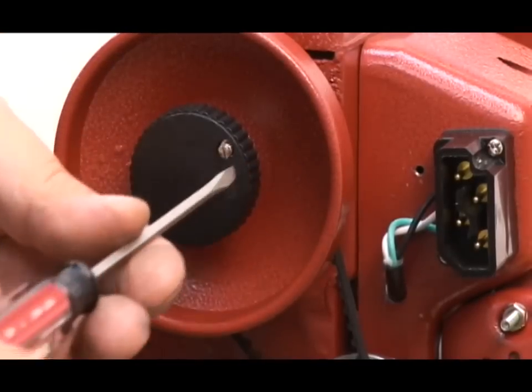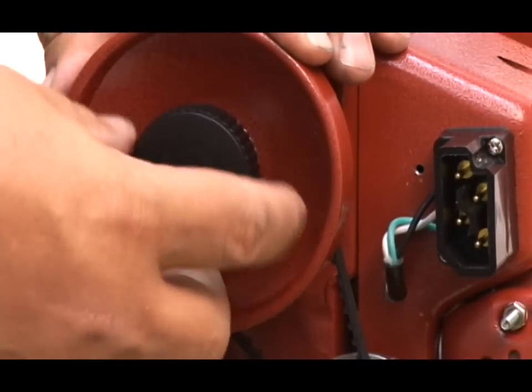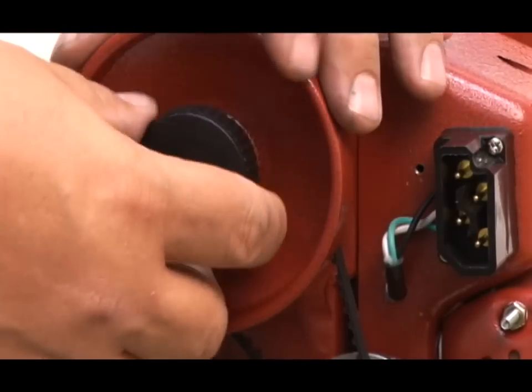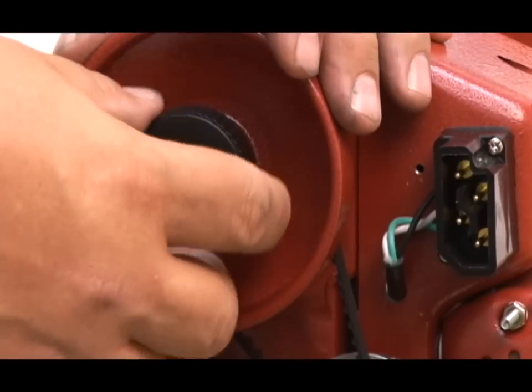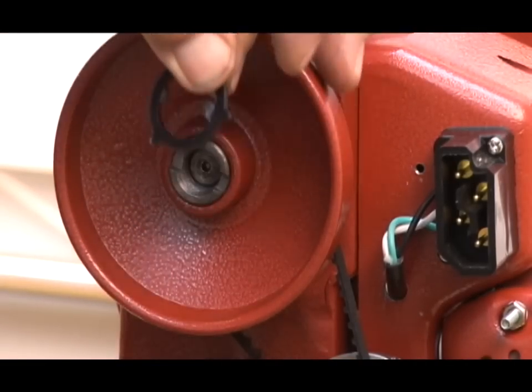Remove the screw in the clutch knob, then grasp the clutch knob and remove it. Once the clutch knob is removed, you'll find a clutch washer underneath. Remove the washer and set it aside.